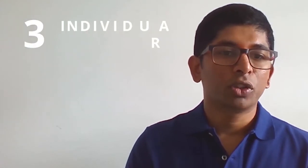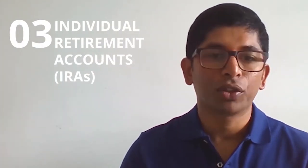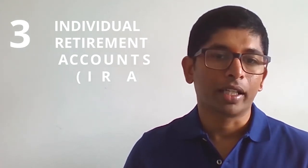The next strategy is to contribute money to Individual Retirement Accounts, commonly referred to as IRAs or Individual Retirement Arrangements. You have traditional IRAs and Roth IRAs. Traditional IRAs are the ones that allow you to take a tax deduction. If you contribute to a Roth IRA you will not get a tax deduction for that at the time.